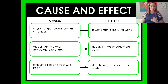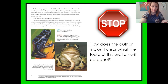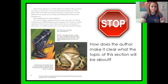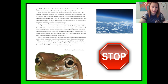Let's talk about some causes and effects. The chytrid fungus spreads and kills amphibians — that's the cause. The effect: there are fewer amphibians living in the world. Then another one: global warming and temperature changes — that's the cause — and the deadly fungus spreads more easily. Let's go back and look at that in the text. "To make matters worse, global warming seems to cause temperature changes" — notice this word: "cause." Global warming seems to cause temperature change, temperatures that help the fungus spread.